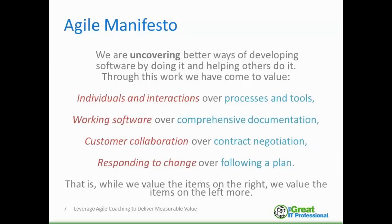The red and the blue here represent those paired core values. The left side is of more value than the right side. The right side — processes and tools, for example — is valuable, and we need tools like JIRA, Azure DevOps, Version One, and Confluence that are being used in the agile space. But it's the individuals and interactions that really add phenomenal value.